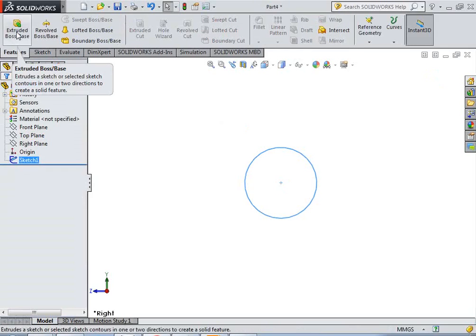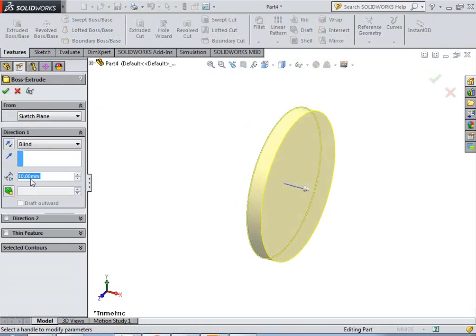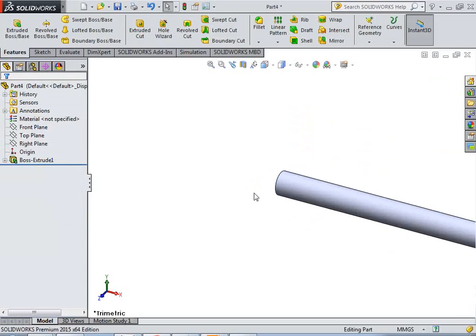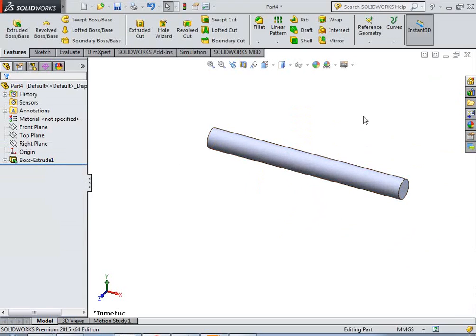Select features and select extrude boss, enter the depth value of 1000 millimeter. So, we have the model of simple circular shaft in SolidWorks.